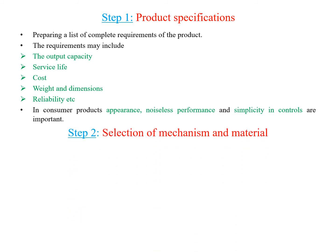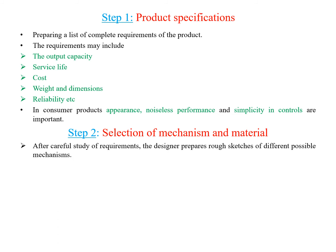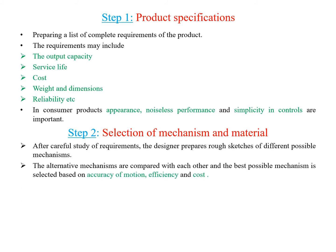Step two is the selection of mechanism and materials. After careful study of requirements, the designer prepares rough sketches of different possible alternative mechanisms and compares each. The best possible mechanism is selected based on accuracy, motion, efficiency, and cost.